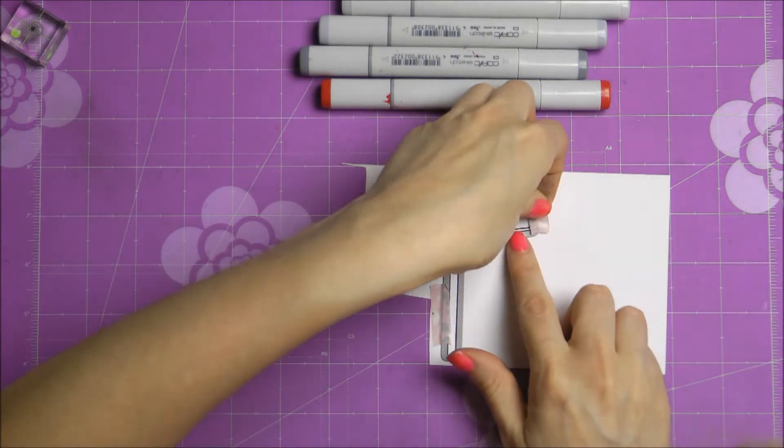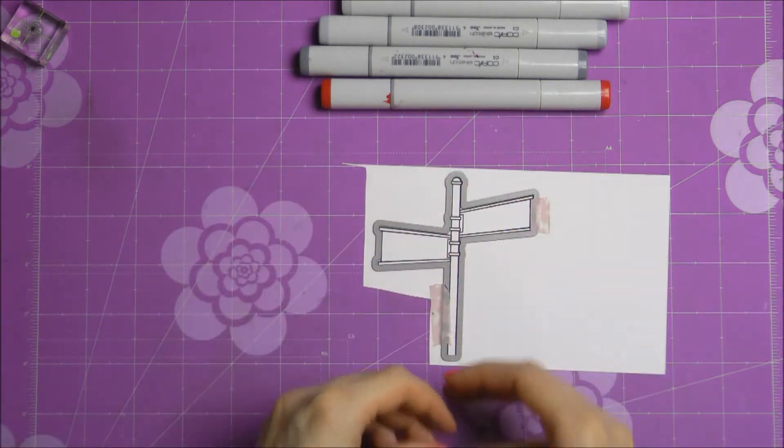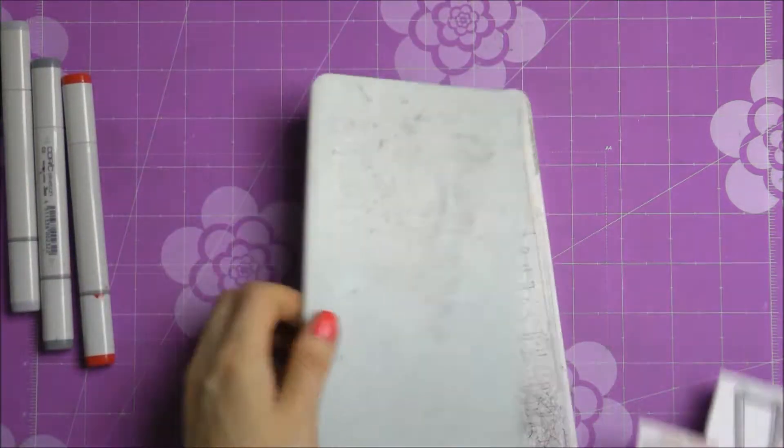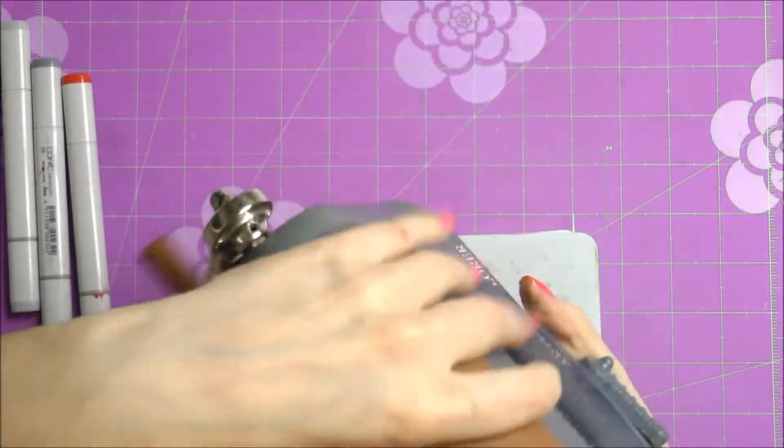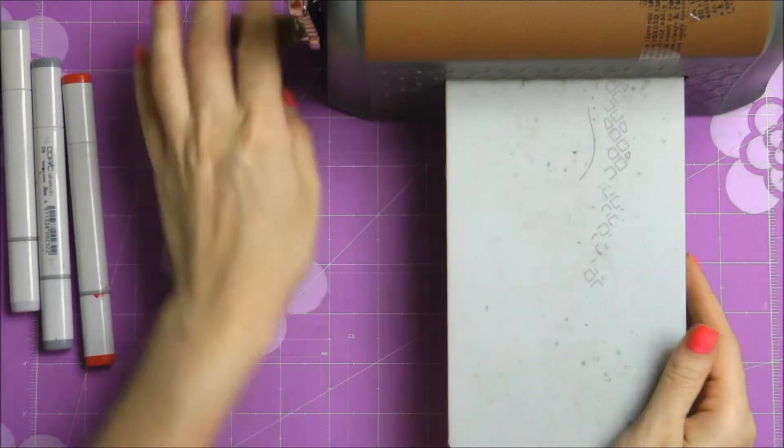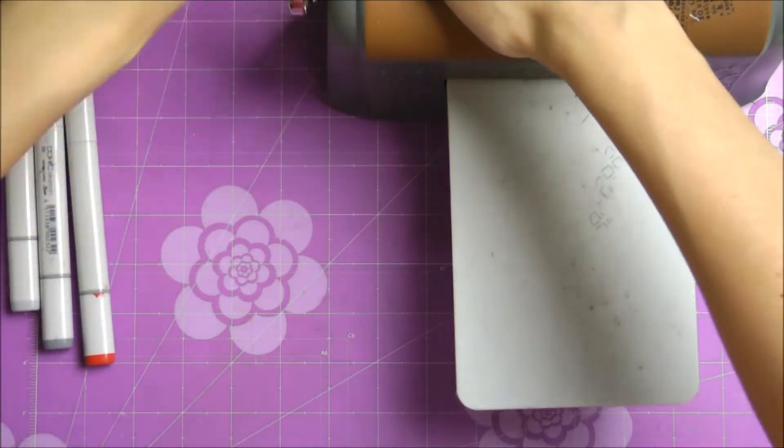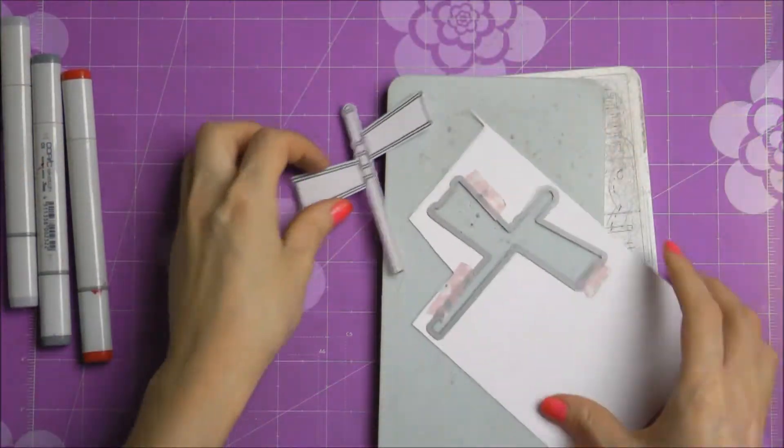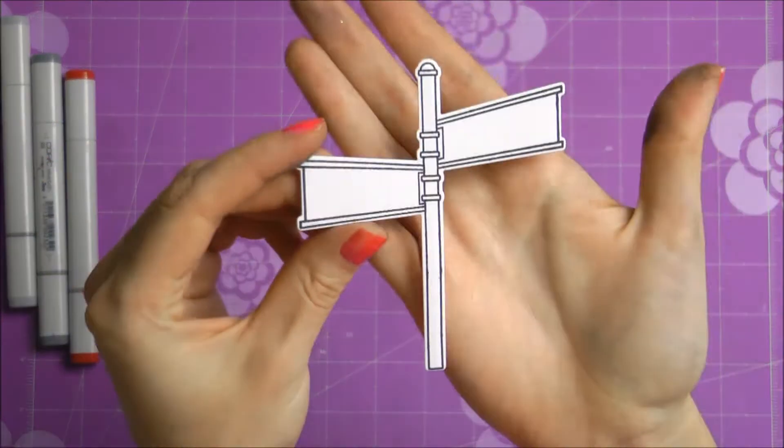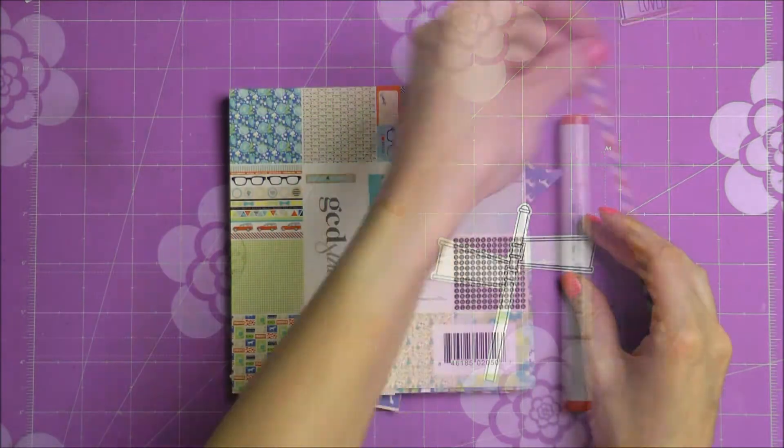It's a matching die and I'm using some washi tape to make sure I secure the die in place and that it stays in place while I do my die cutting. To die cut my image I'm going to use an Artisan Explorer die cutting machine from Spellbinders. But you can use any other die cutting machine for this. The wafer thin dies from Neat & Tangled are going to work in any die cutting machine. They're just like any other wafer thin dies.